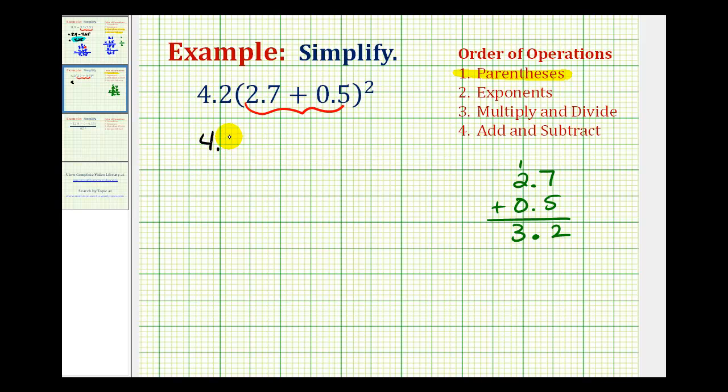So now we have 4.2 times 3.2 squared. Now we want to simplify the exponents, so we want to square 3.2. Well, 3.2 squared means 3.2 times 3.2, so let's go ahead and do that over here.